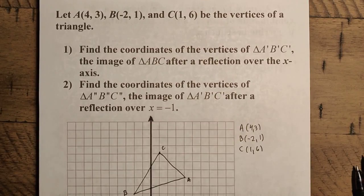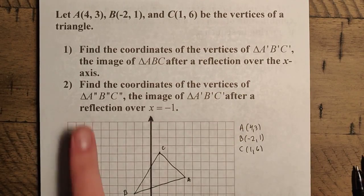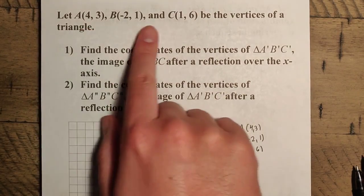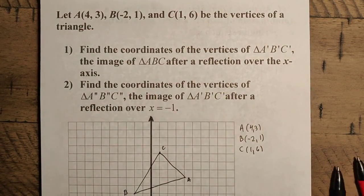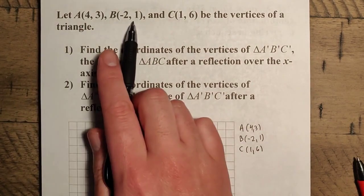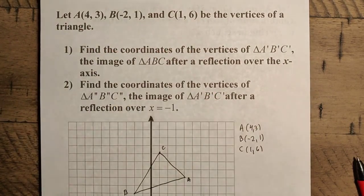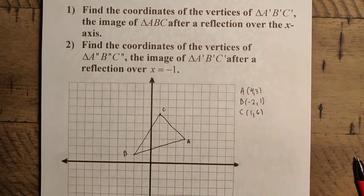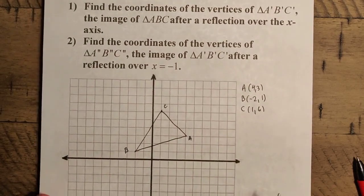Hello everybody and welcome. Let's have a look at this to start off, where we have some information regarding a triangle. Here are the points 4, 3, negative 2, 1, and 1, 6 — the vertices of the triangle. As you can see, I've sketched it down here.